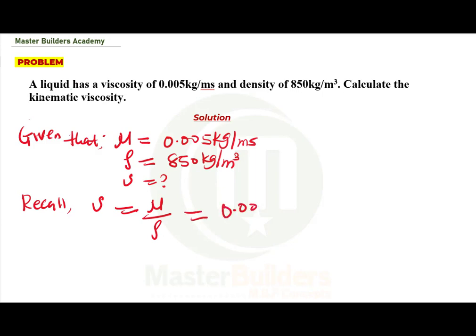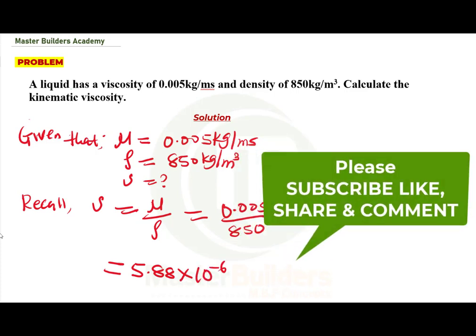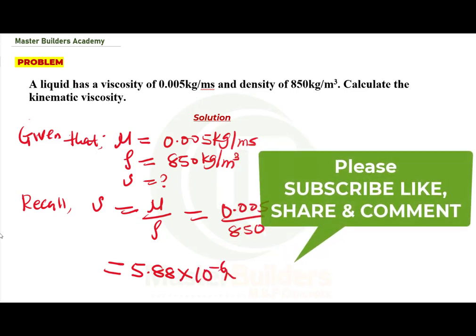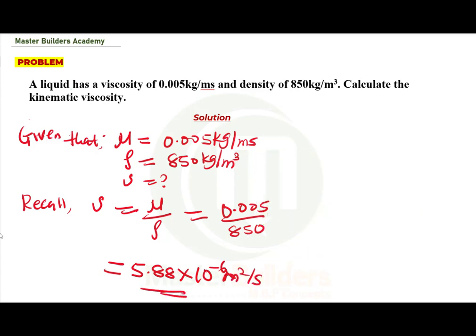If we substitute, this gives us 0.005 all over 850. When we divide 0.005 by 850, our answer becomes 5.88 times 10 to the power of minus 6 meter squared per second. So this is the answer to this very question that we have before us.